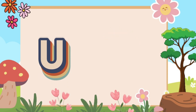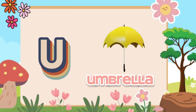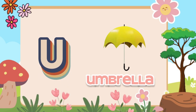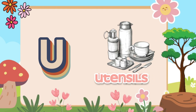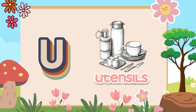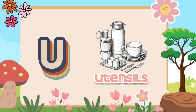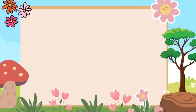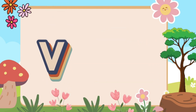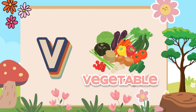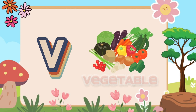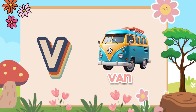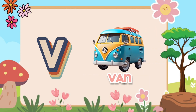U. U for umbrella. U for utensils. V. V for vegetable. V for van.